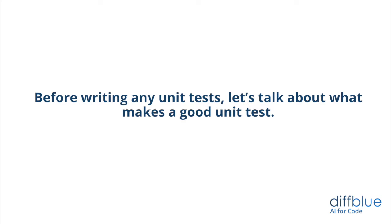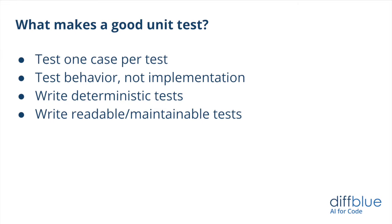So before we talk about how to write good unit tests, let's talk about what makes a good unit test. Here we have a list of things that make a particular unit test a good test case. The first one: testing one thing. Sometimes this seems counterintuitive — when you're writing a test, you think you can check five or six different things with one test case. But the problem is, when that test case fails, you don't know immediately what the problem is. By testing one specific piece of behaviour per test, you know exactly what's broken in your product when that test fails.